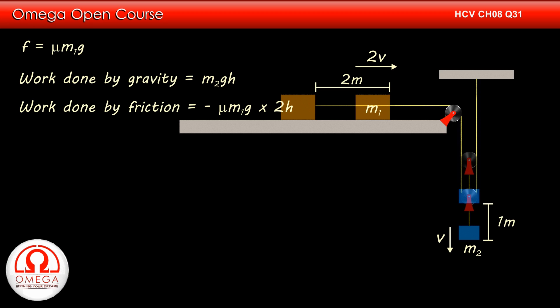Since the block on the table moves twice the distance moved by 1 kg block, the energy dissipated by the friction is equal to mu m1g into 2h. Hence, the network done on the system is m2gh minus 2 mu m1gh.